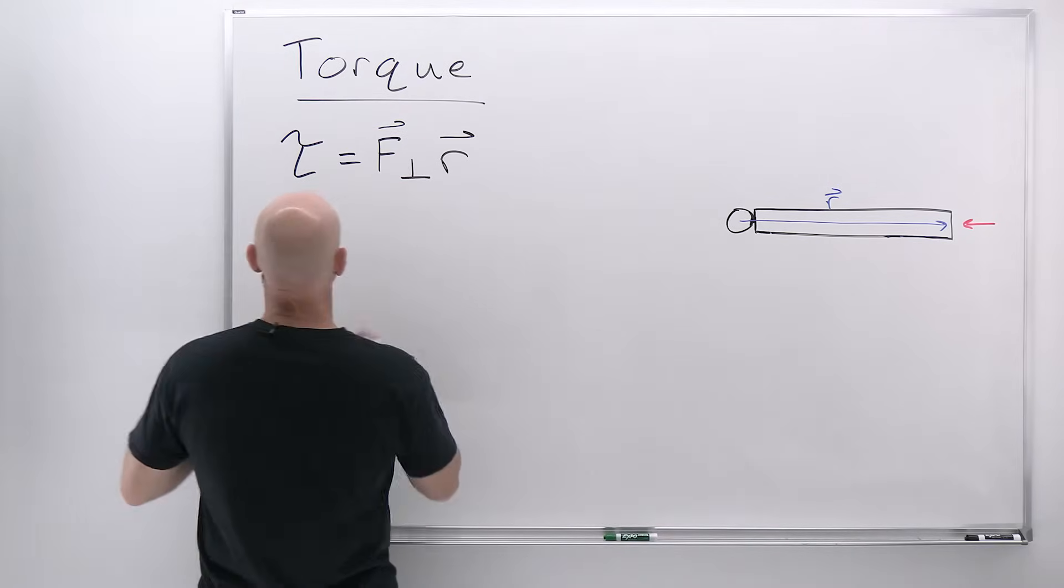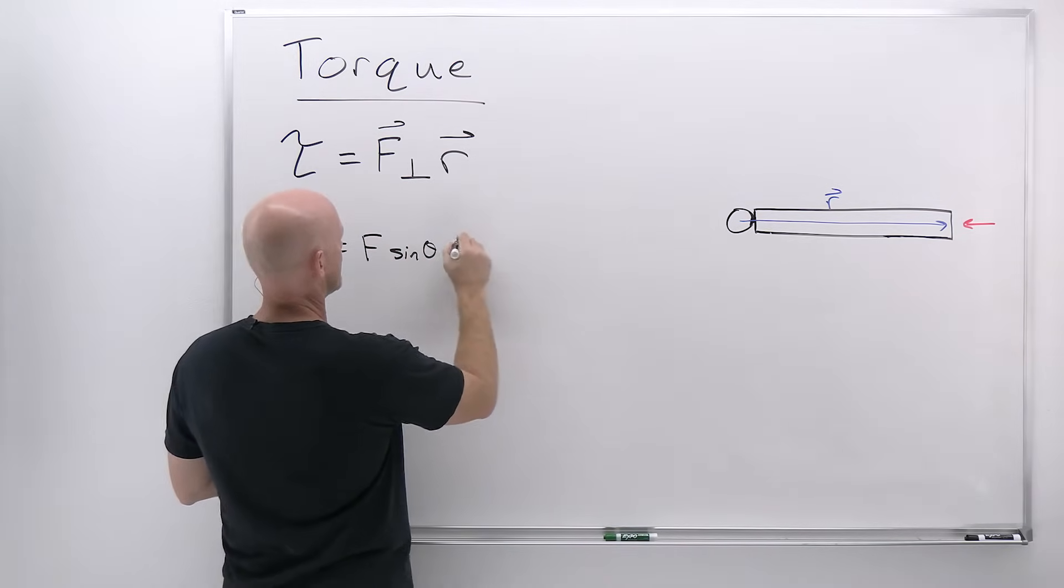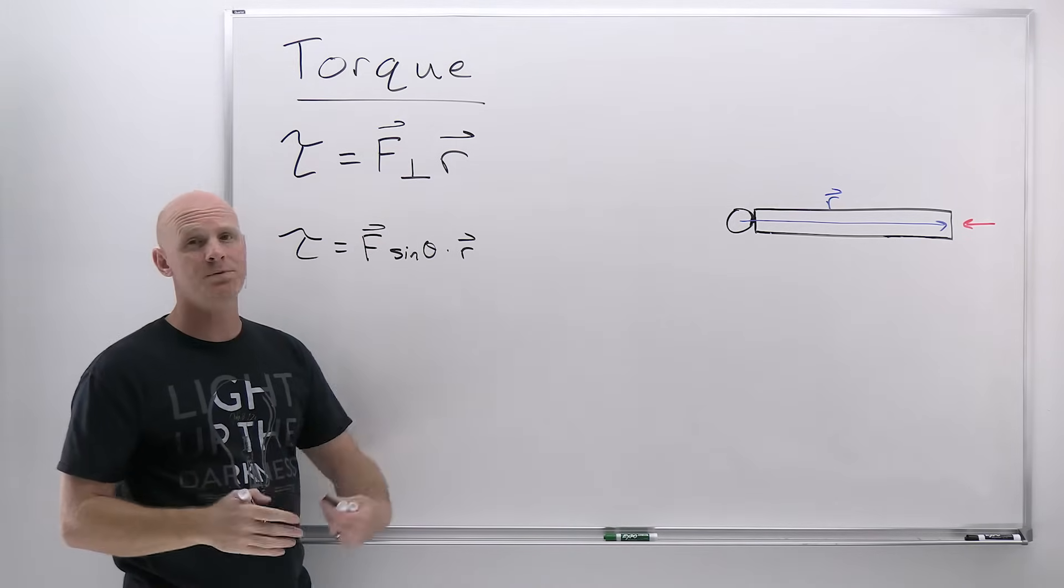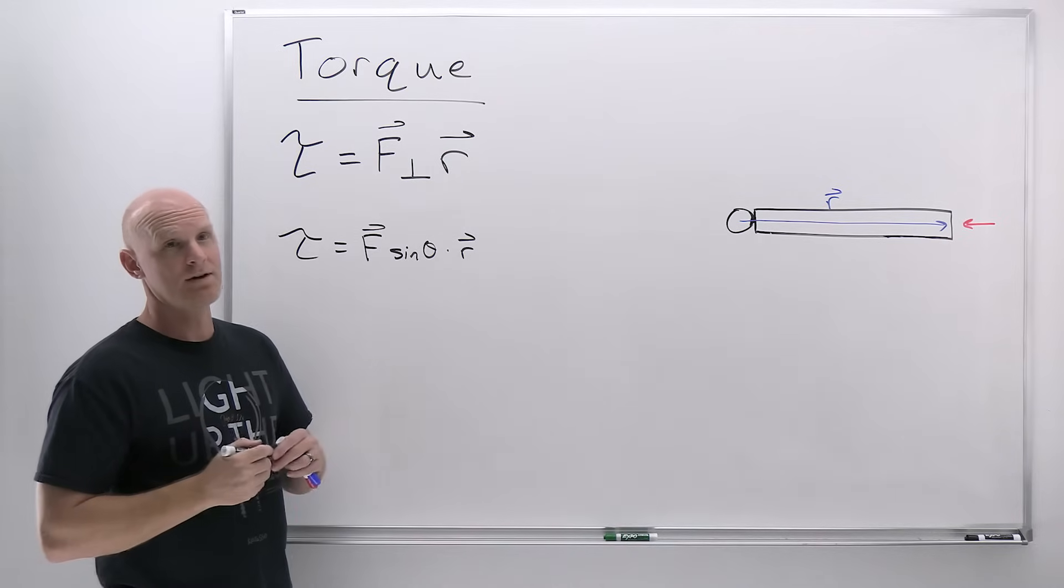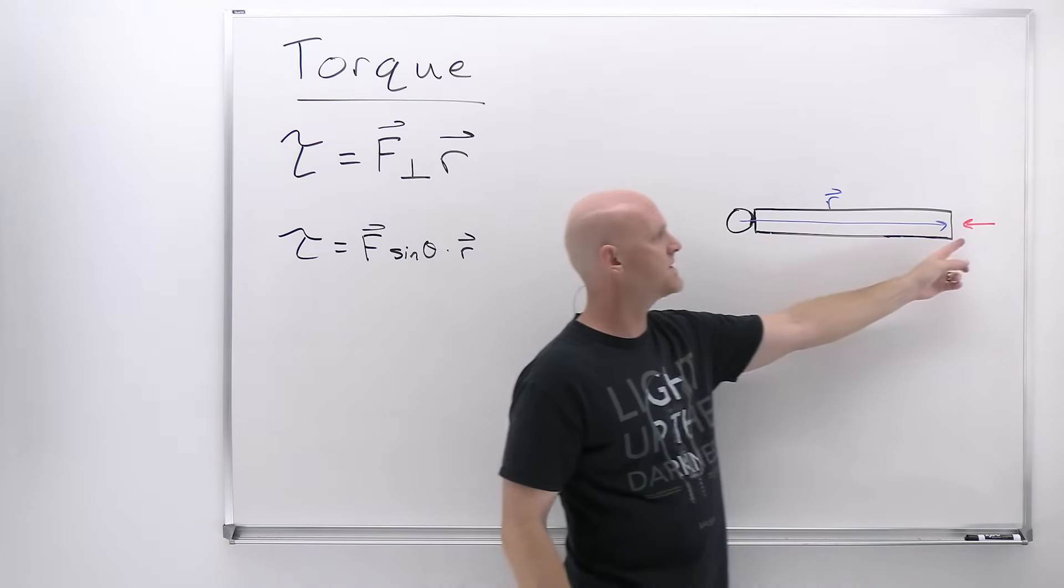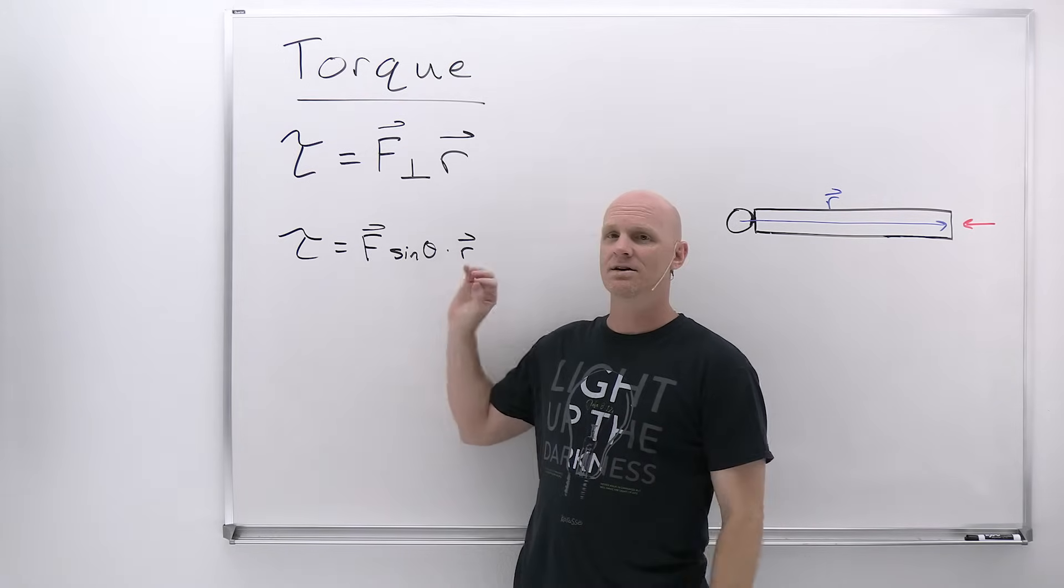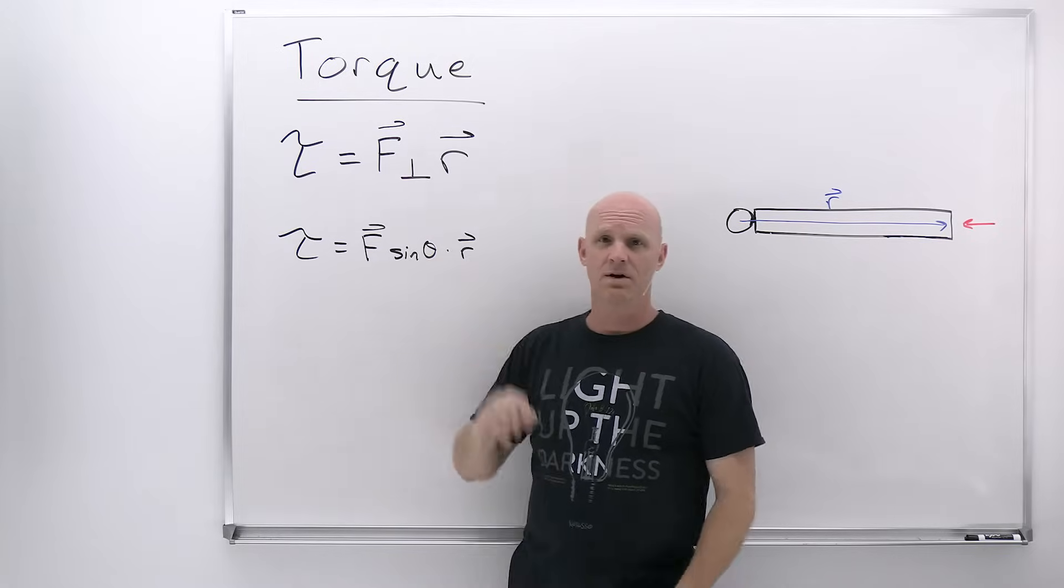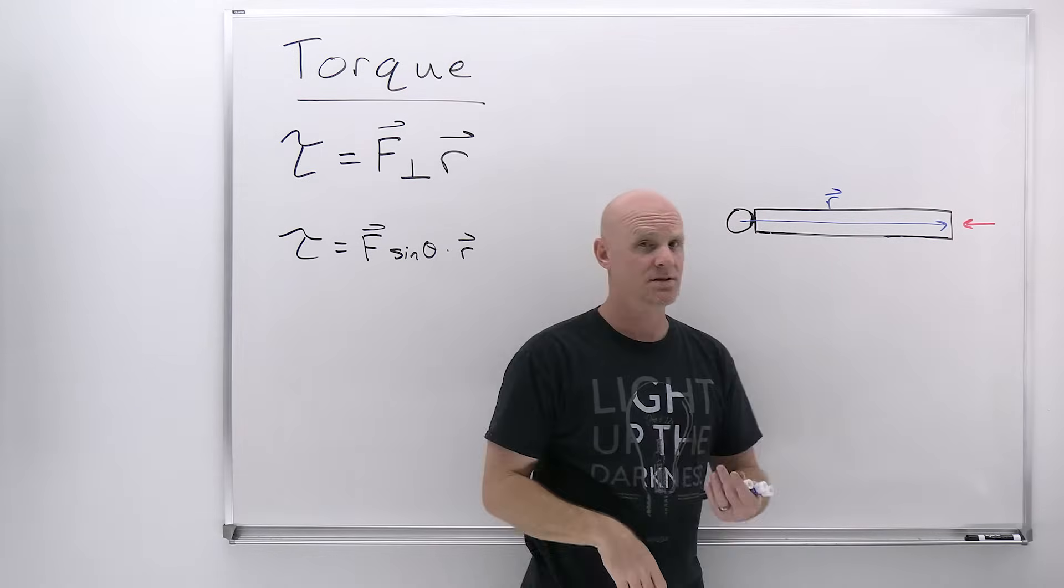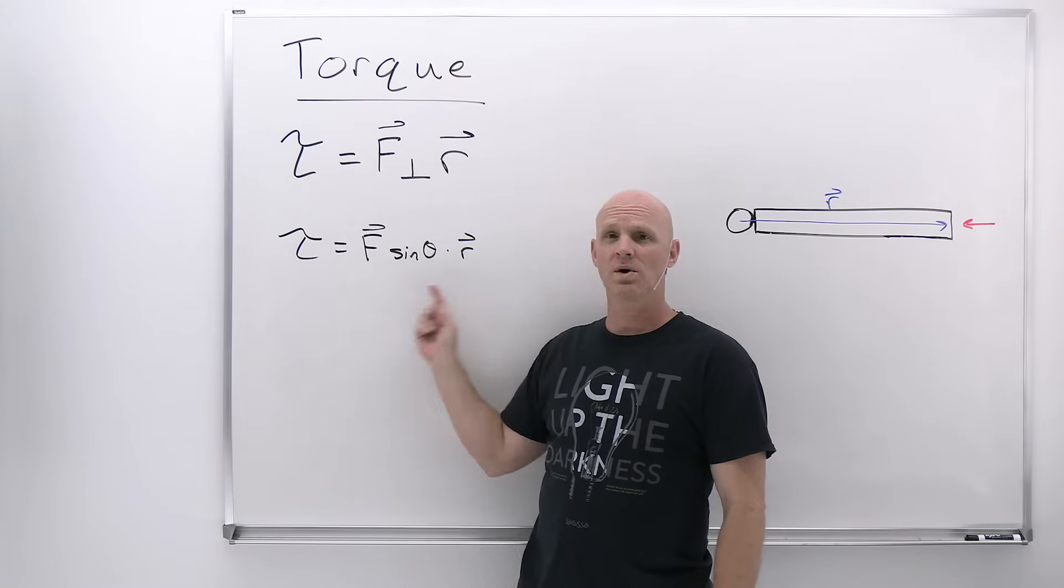The equation you're typically presented with is F sine theta times your lever arm. F sine theta is the component of the force that is perpendicular to the lever arm. If my force is anti-parallel to my lever arm, 180 degrees opposite, the sine of 180 is zero and the torque goes to zero. If theta is zero, the sine of zero is also zero, and torque is zero.